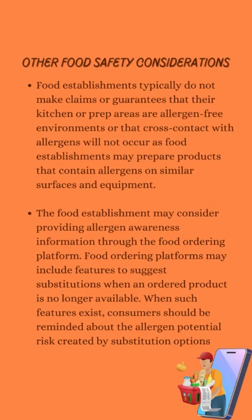Food establishments typically do not make claims or guarantees that their kitchen or prep areas are allergen-free environments or that cross-contact with allergens will not occur, as food establishments may prepare products that contain allergens on similar surfaces and equipment. The food establishment may consider providing allergen awareness information through the food ordering platform. Food ordering platforms may include features to suggest substitutions when an ordered product is no longer available, and consumers should be reminded about the allergen potential risk created by substitution options.